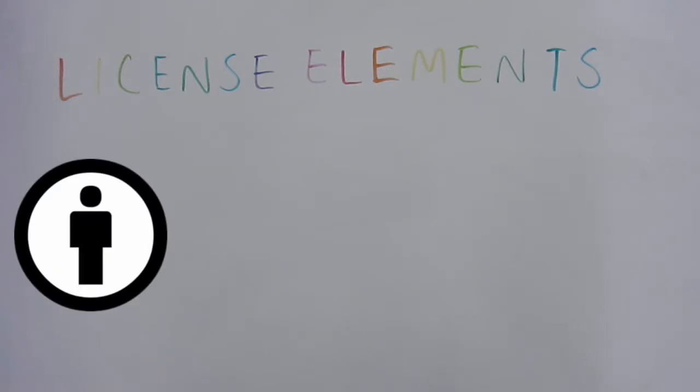So, CC has four license elements. They all stand for different things, and are attribution. And if you label your work with this, it means that others must credit you as the original creator of the content.